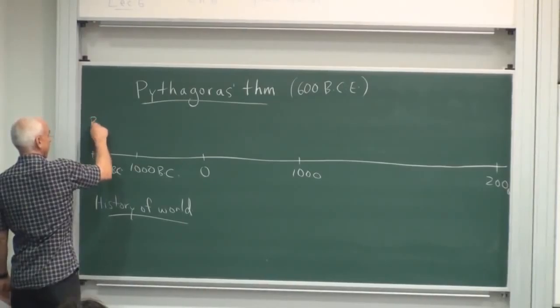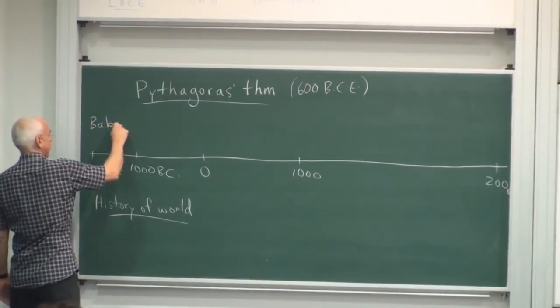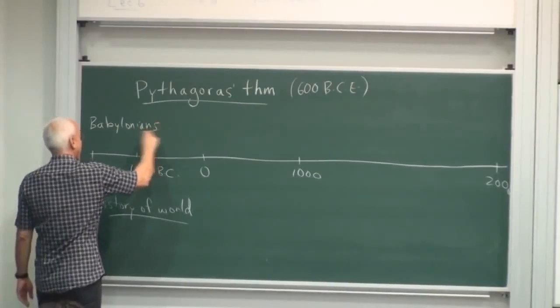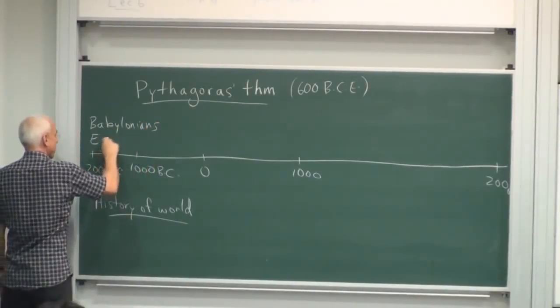So we had ancient Mesopotamia, or sometimes just called the Babylonians. And roughly concurrent with them, the Egyptians.